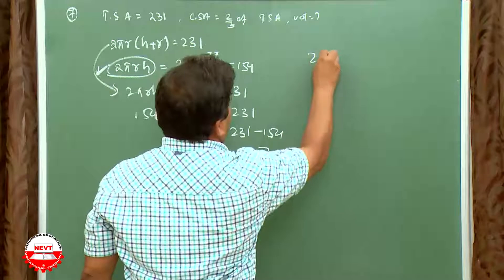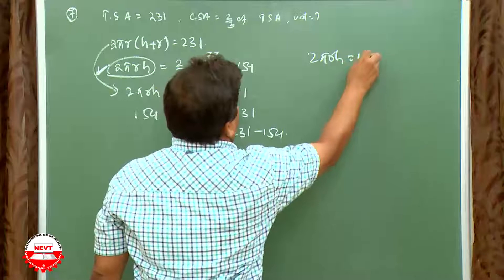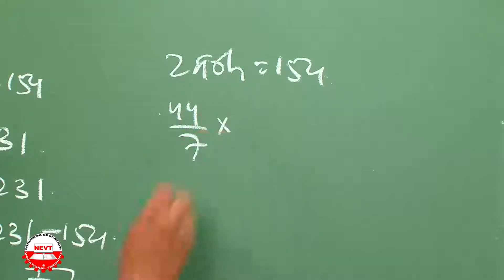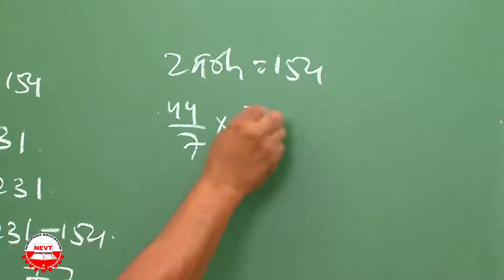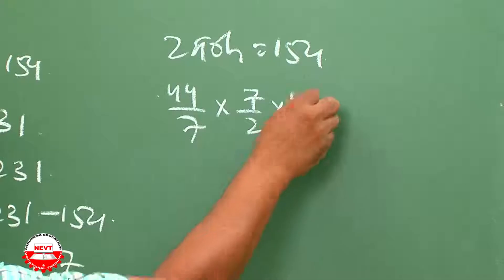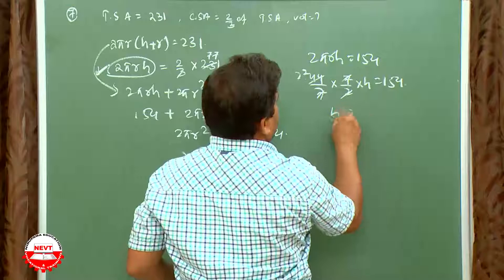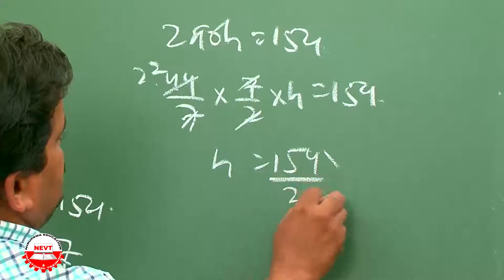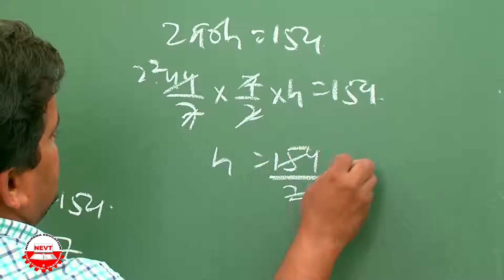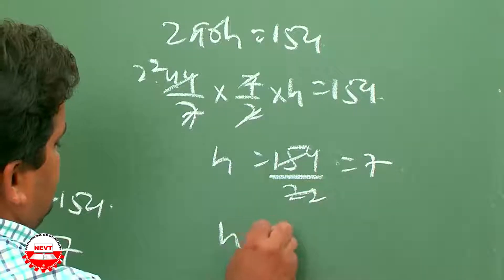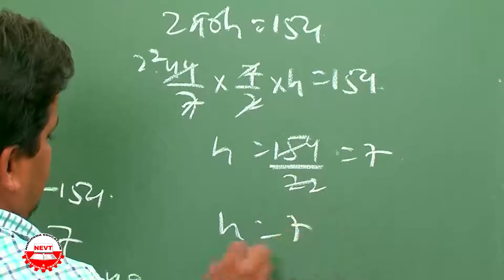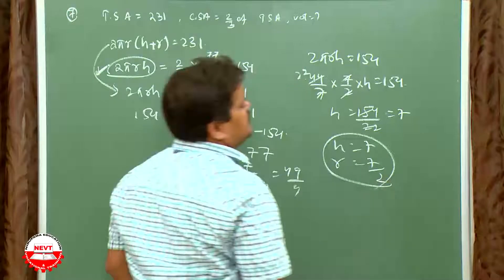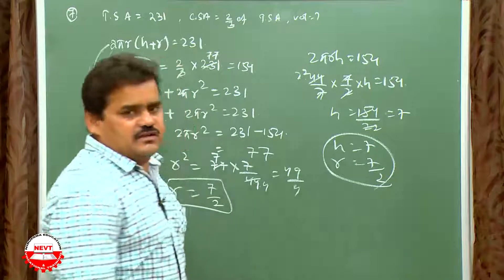Now substituting back: 2πrh = 154 gives h = 154/22 = 7. So h = 7 and r = 7/2. You can now find the volume using πr²h.